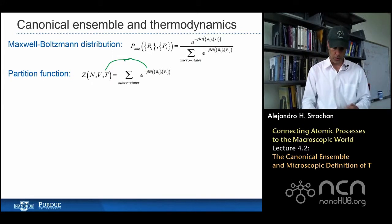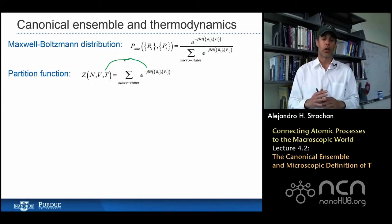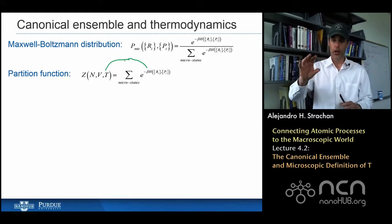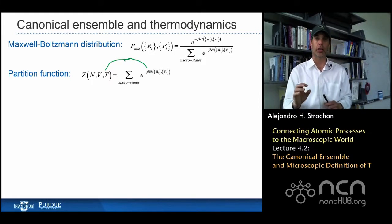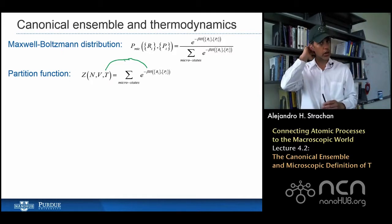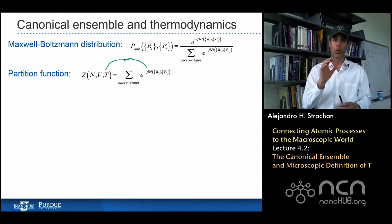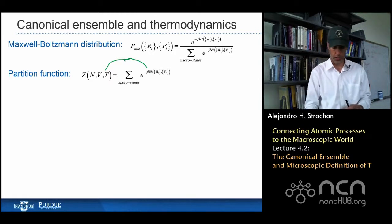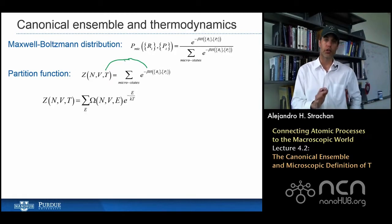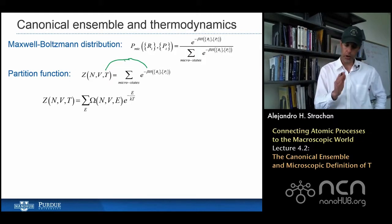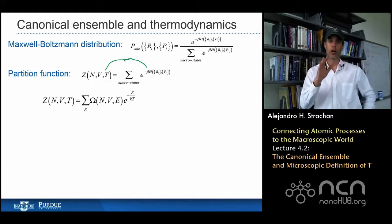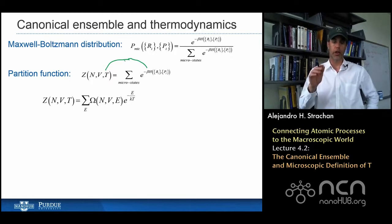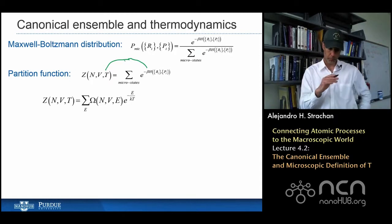What we're missing is a connection between these microscopic probabilities and the macroscopic world. Just as in the microcanonical ensemble, we want the connection to a free energy or entropy. So let's look at this partition function in a little more detail. The partition function is a sum over all possible microscopic states of e to the negative beta times the energy. Of course, many states will have the same energy and will contribute the same value to this sum.